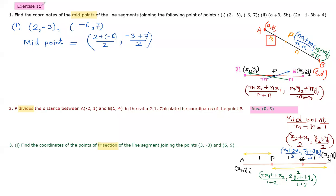Exercise 11: we have to find out the midpoints. The formula is just add the abscissa divided by 2 and also sum of ordinate divided by 2. The first point is (2, -3) and (2, -6, 7) — so x1 is 2, y1 is -3, x2 is -6, y2 is 7. We add the abscissas: x1 plus x2 is 2 plus -6, and for the ordinate -3 plus 7.